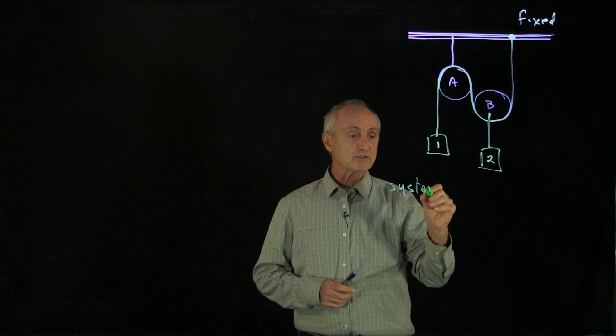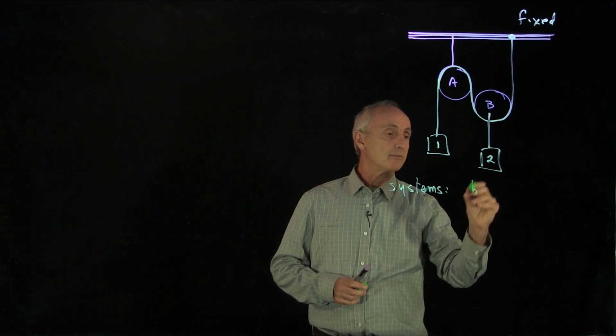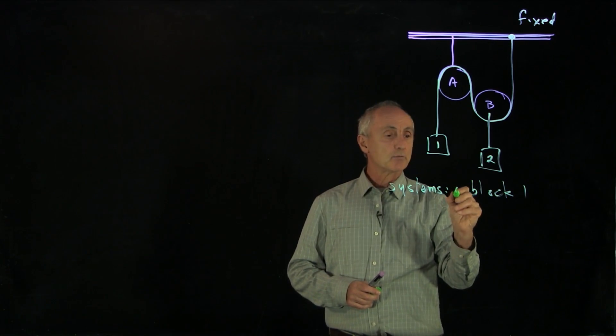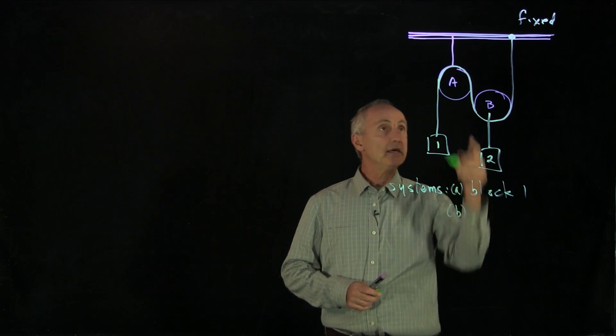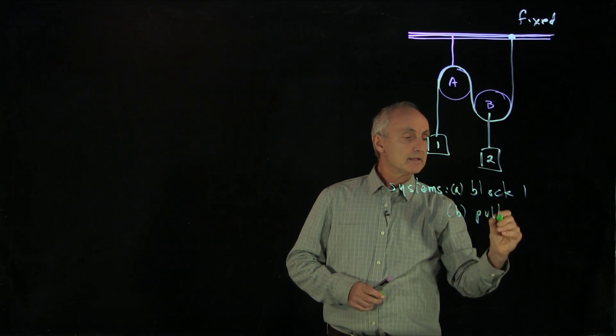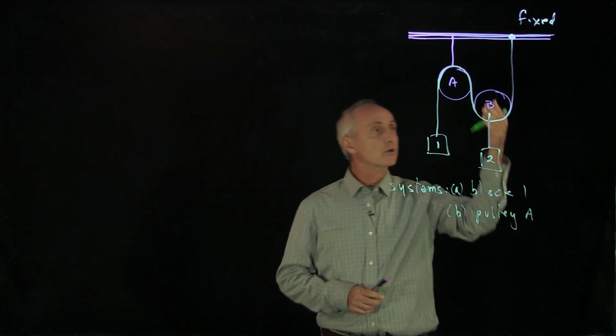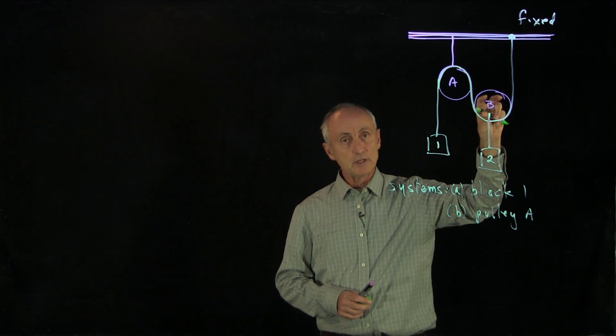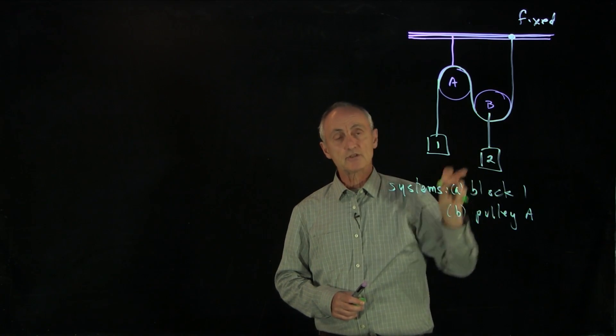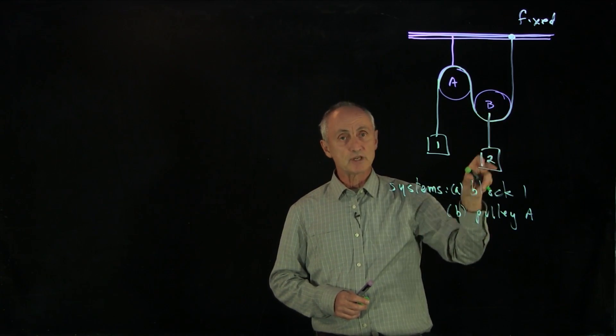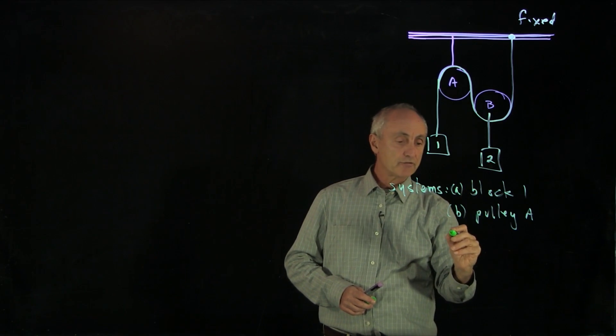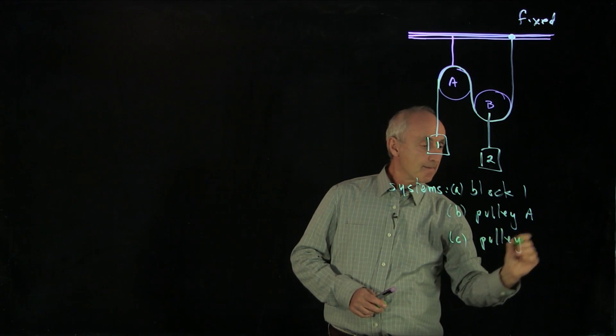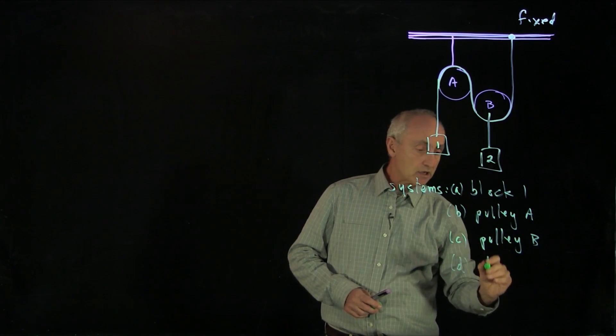Let's consider the ones that we're going to look at. The first one is very simple, it will be block 1. And the second system that we look at, we'll call that A, B, is Pulley A. That brings us to an interesting question about B, Pulley B, and Block 2. Because we could separately look at Pulley B and we could separately consider Block 2, or we consider them together. And I want to first consider, separately, Pulley B and Block 2.